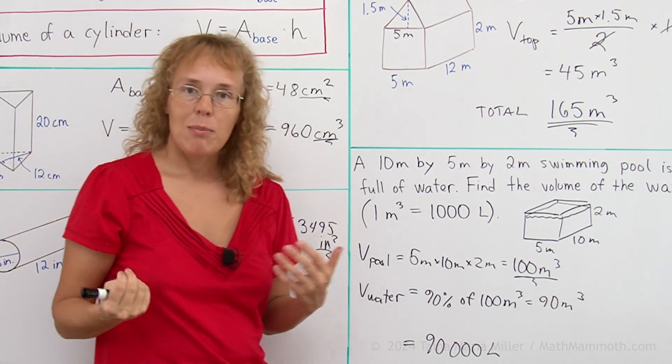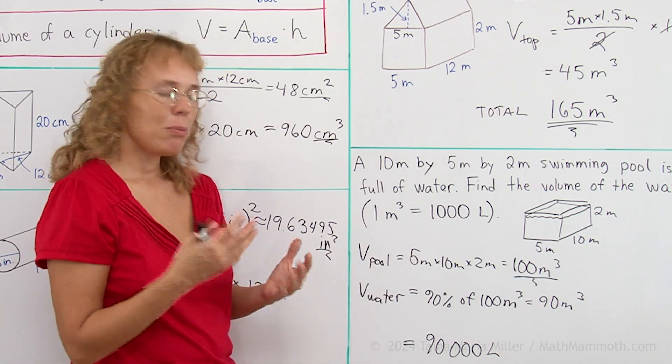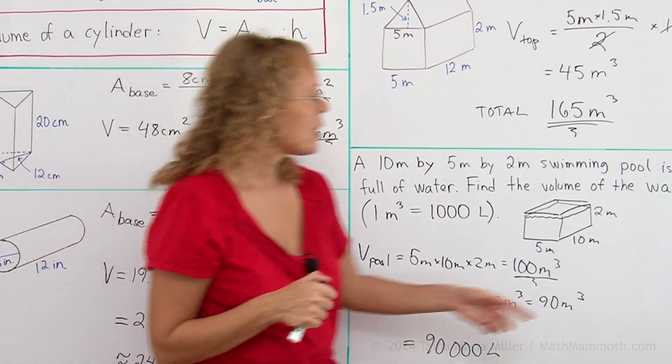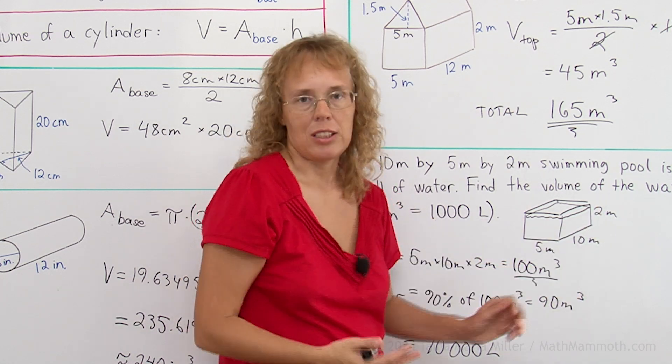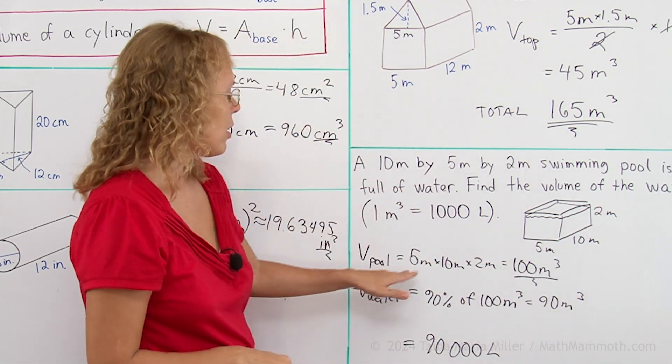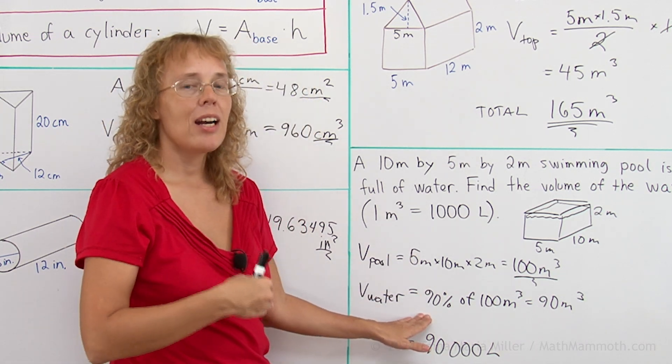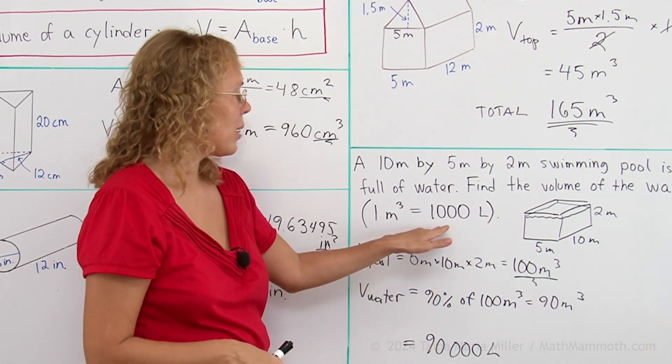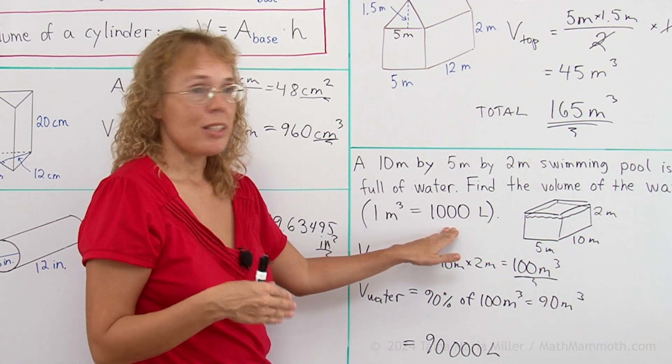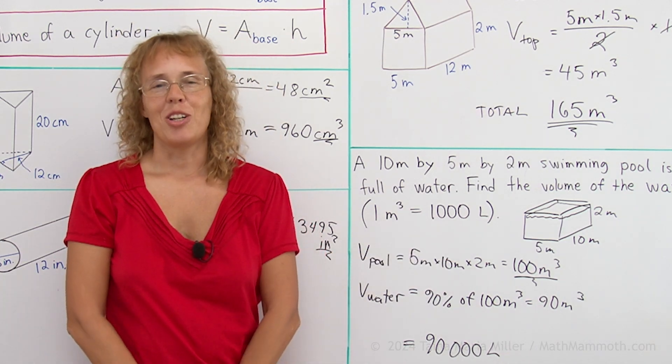Now I had very easy numbers for this, like 5 to 10, but the principles are the same if the numbers were, let's say, 1.68 and 12.2 meters and so on. You first calculate the volume of the pool. Then you take 90% of that, which would be multiplied by 0.9. And then you multiply the volume by 1000 liters per one cubic meter. Okay, we're all done with this lesson. I hope it was helpful.